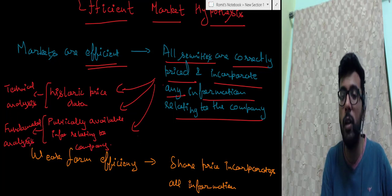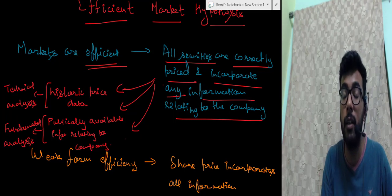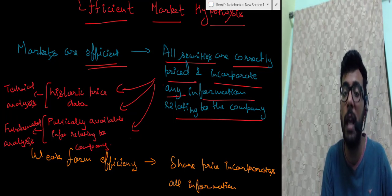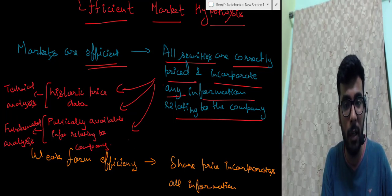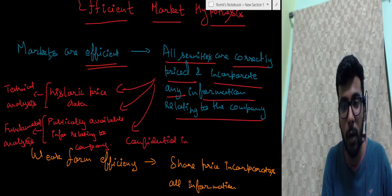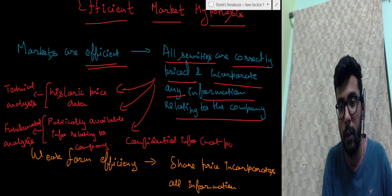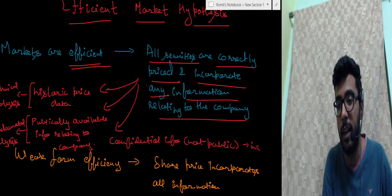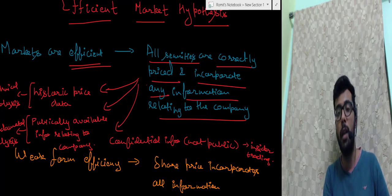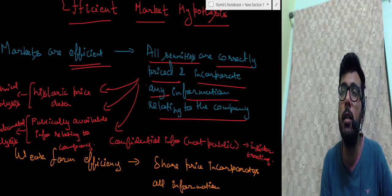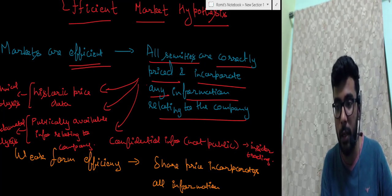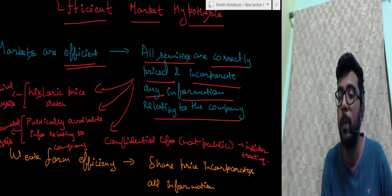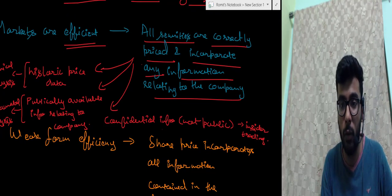There is also a third type of information — information which is only available with the management of the company. That is not publicly available; we can call it confidential information. The kind of trading that occurs based on this is called insider trading, and it is only done by individuals who have access to such information. Such trading is considered unfair to the market because this information is not publicly available, and thus insider trading is banned in many countries.